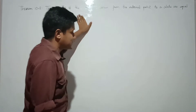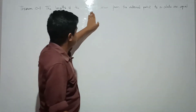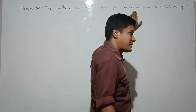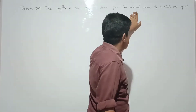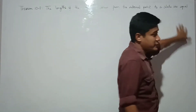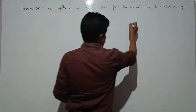The length of the tangent — tangent length drawn from the external point to a circle — the tangents are equal.